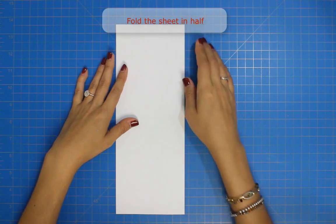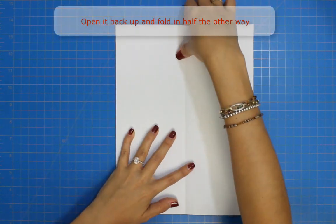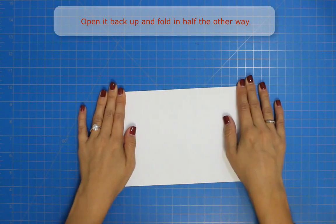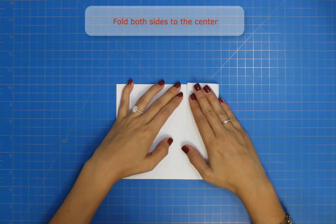Fold the sheet in half vertically, open it back up, and then fold it in half the other way. Fold both edges to the center.